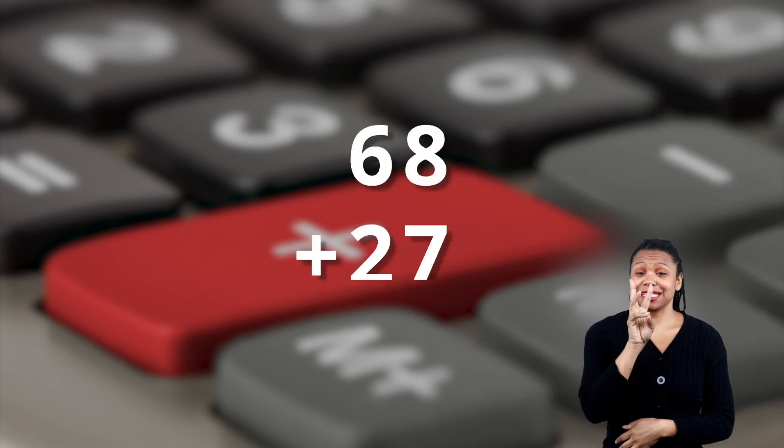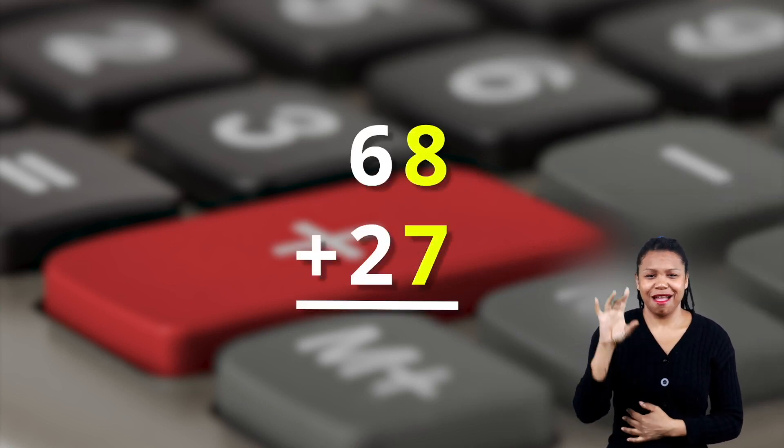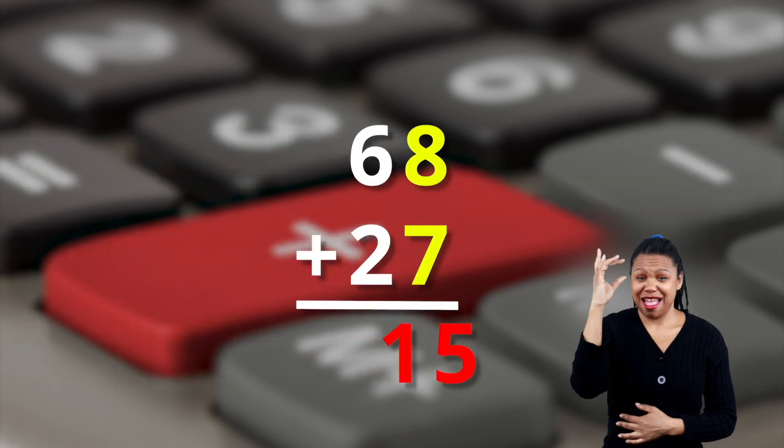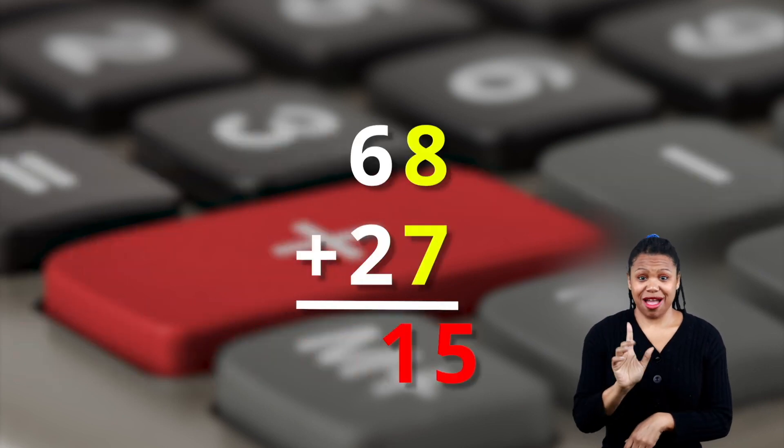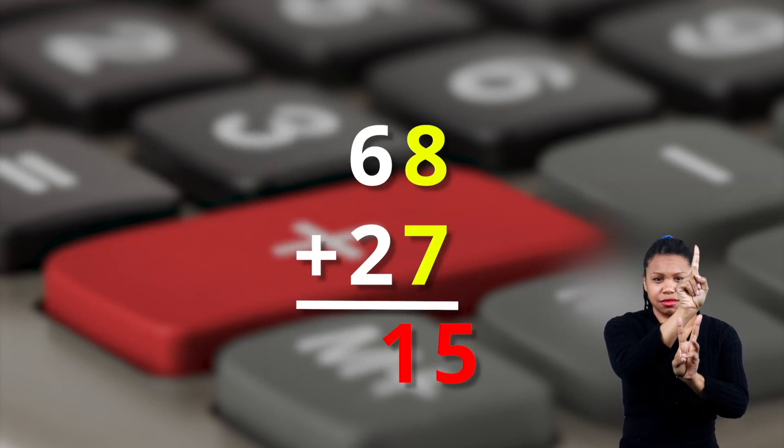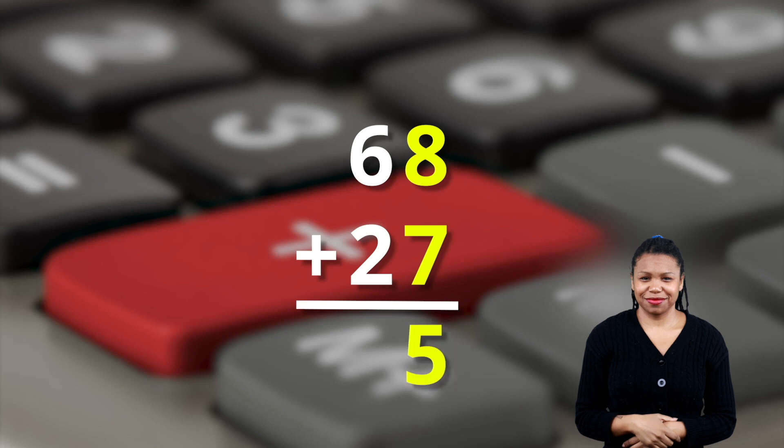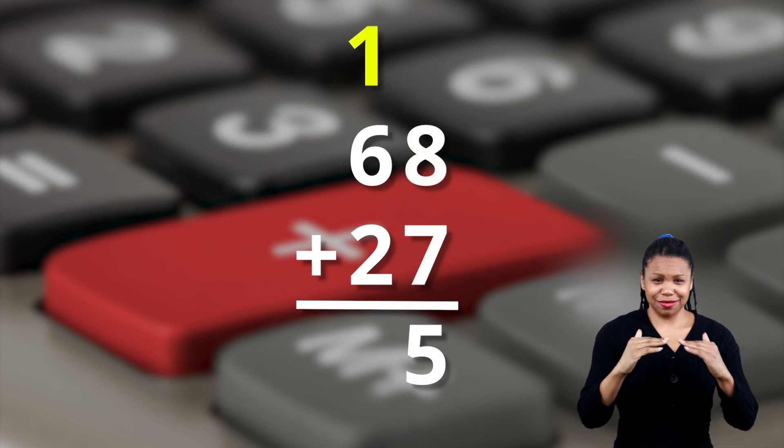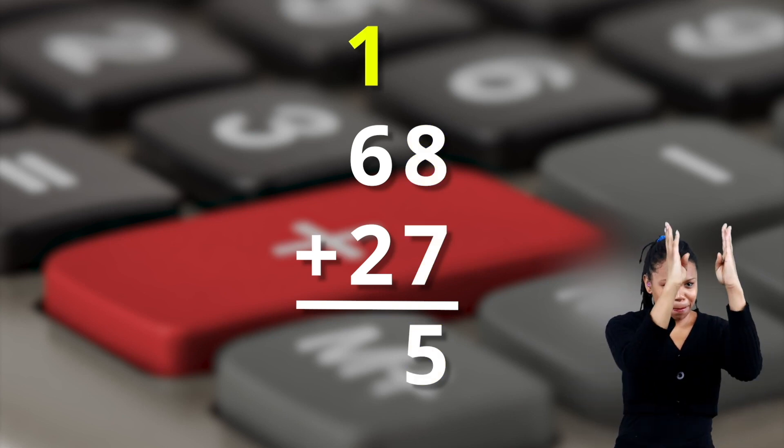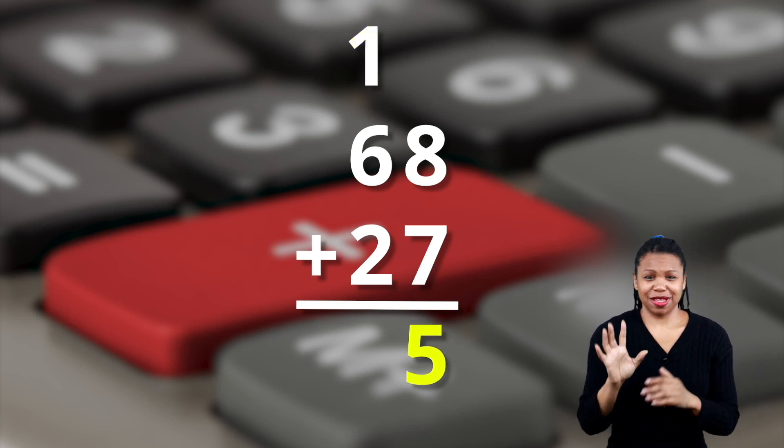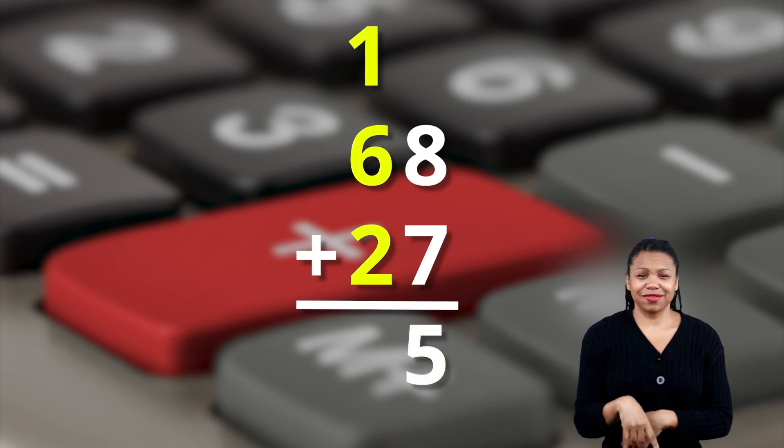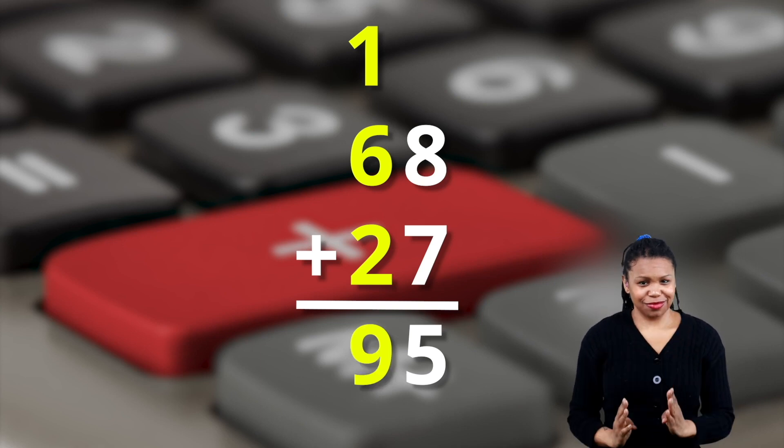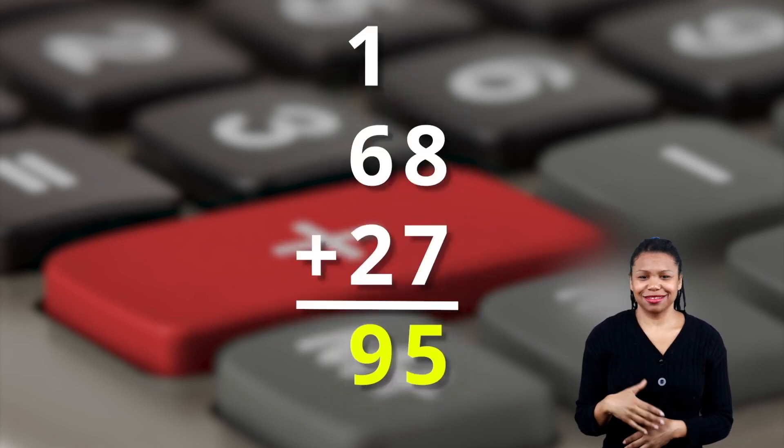So here we have sixty-eight plus twenty-seven. First, add the numbers in the ones column. The sum of eight and seven is fifteen. And since you can't write fifteen in that column, it needs to be regrouped into one ten and five ones. You write the five ones in the column below the eight and seven. Then you take the one ten and regroup it by writing it above the six and two in the tens column. Then you add as usual. So you end up with a five in the ones column and a one plus six plus two or nine in the tens column. So the sum of sixty-eight plus twenty-seven is ninety-five. How super simple is that?